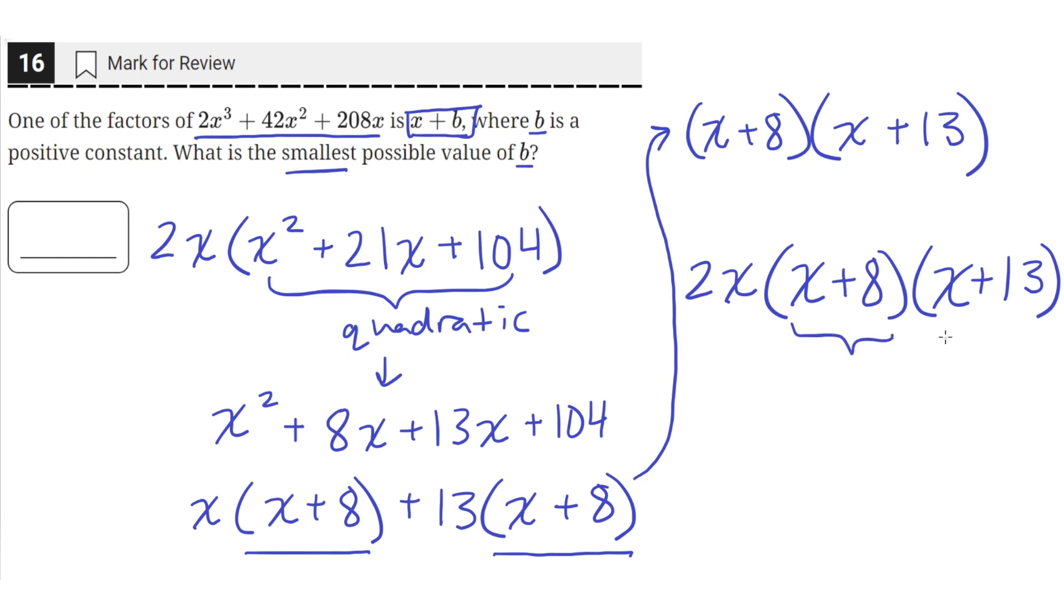So only these two are of the form x plus some constant. Here, this is x plus 8, and this is x plus 13. This factor here is just a constant being multiplied with x. It's not of the form x plus b. So we won't consider this one.